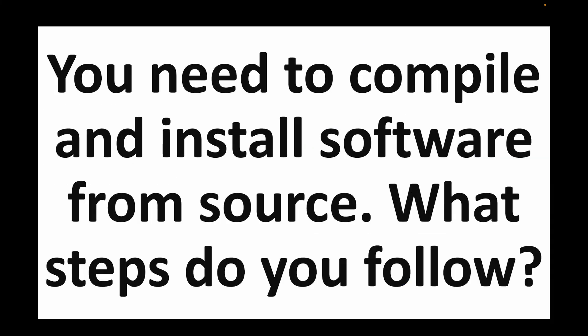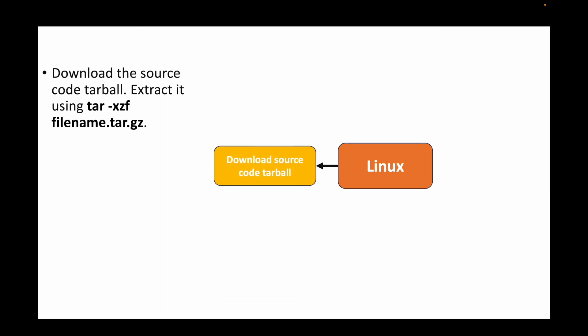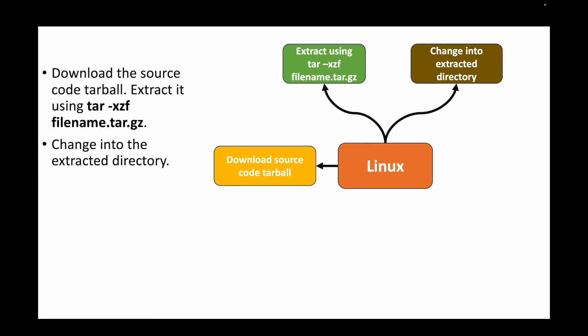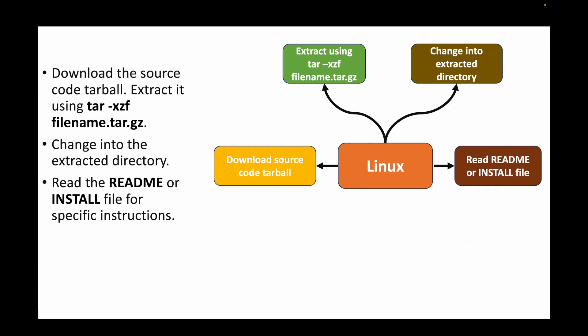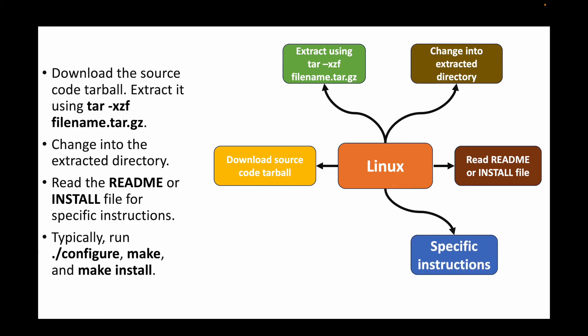The next question: you need to compile and install software from source — what steps do you follow? Download the source tarball and extract it using tar -xzf <tarball>. Change into the extracted directory and read the README or INSTALL file for specific instructions. Run the ./configure script, then run make, and finally make install to compile and install the software.